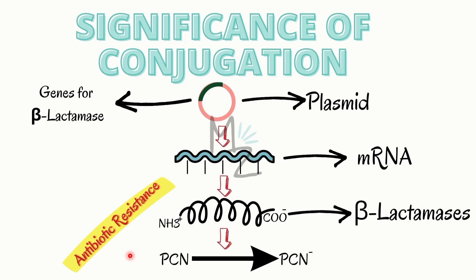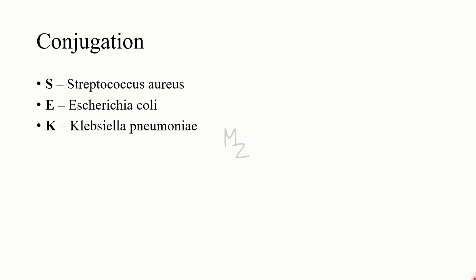For example, bacteria with a plasmid carrying beta-lactamase genes will survive penicillin — a beta-lactam drug — because beta-lactamase degrades it, while bacteria without the plasmid won't. In a petri dish, a bacterium with the plasmid can conjugate and transfer antibiotic resistance. For memorization, the mnemonic SEK: S for Staphylococcus aureus, E for Escherichia coli, K for Klebsiella pneumoniae.